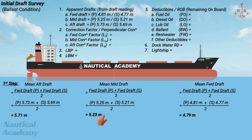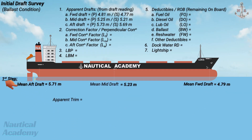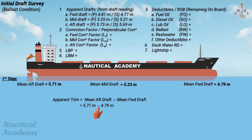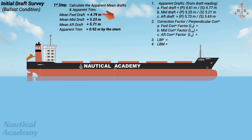This procedure is not necessary if both the port and starboard drafts are the same. To determine the apparent trim, take the difference between the mean aft draft and the mean forward draft — simply subtract the lesser from the greater. The apparent trim is 0.92 meters by the stern, since the aft draft is greater than the forward draft.